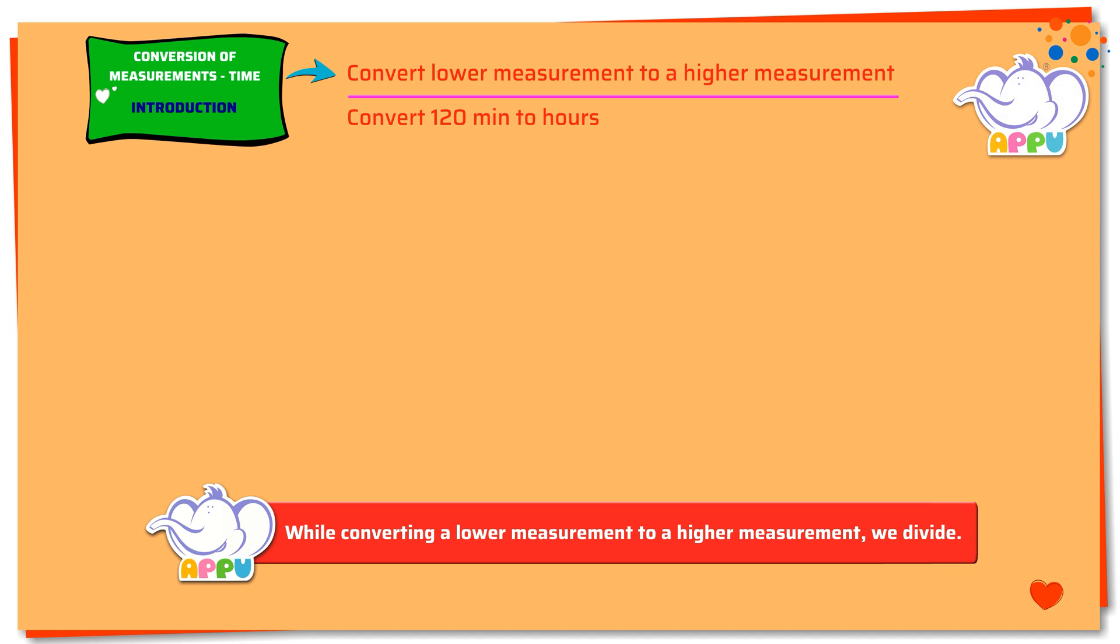Here we need to find how much is 120 minutes in hours. We know that 60 minutes equals 1 hour. So to find 120 minutes, we multiply both sides by 2. 2 times 60 minutes equals 120 minutes. 2 times 1 hour equals 2 hours. We get 120 minutes equals 2 hours.